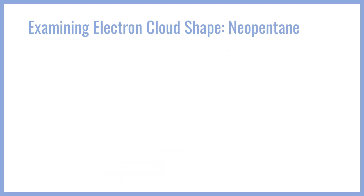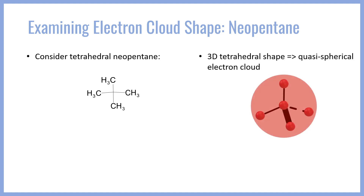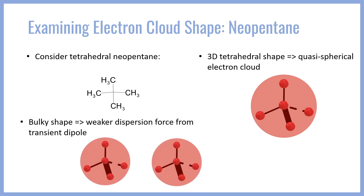On the other hand, if we look at the neopentane structure, its 3D molecular structure is actually tetrahedral, and so its electron cloud is going to be quasi-spherical. Predictably, just like our previous sphere example, these two electron clouds cannot approach each other in a very favorable geometry, and are limited in the amount of interaction they can have. The purple arrows show that we have a much weaker interaction than with the linear n-pentane species.